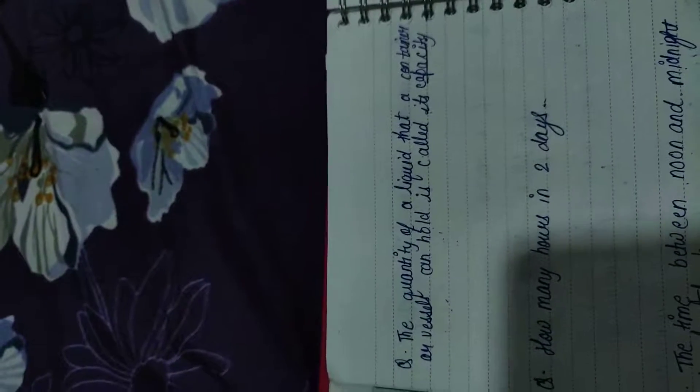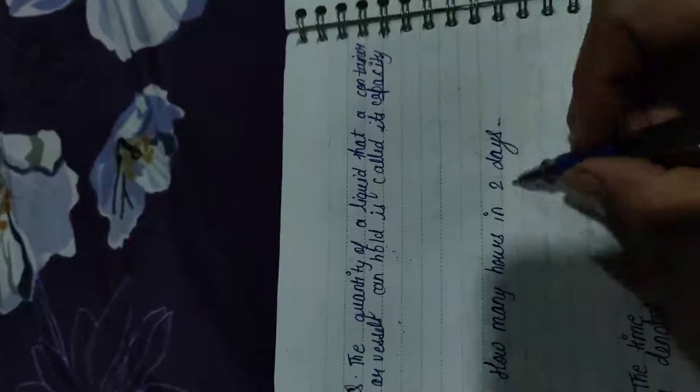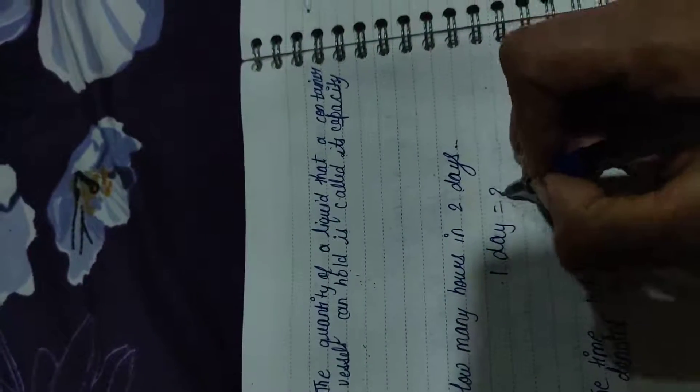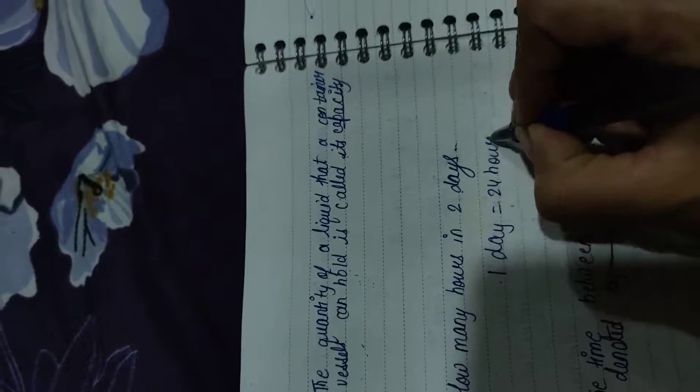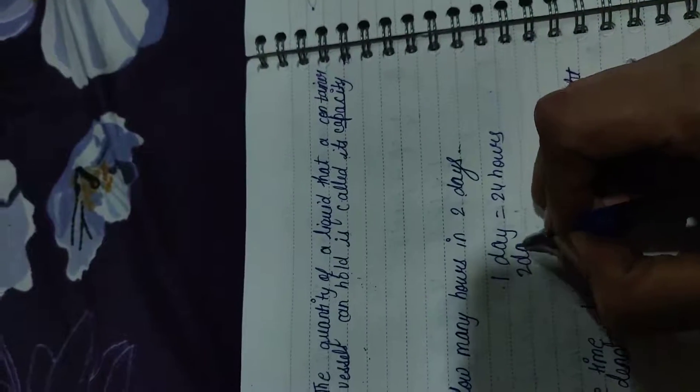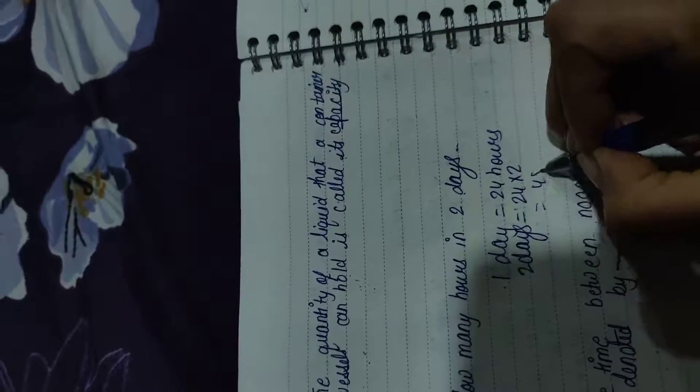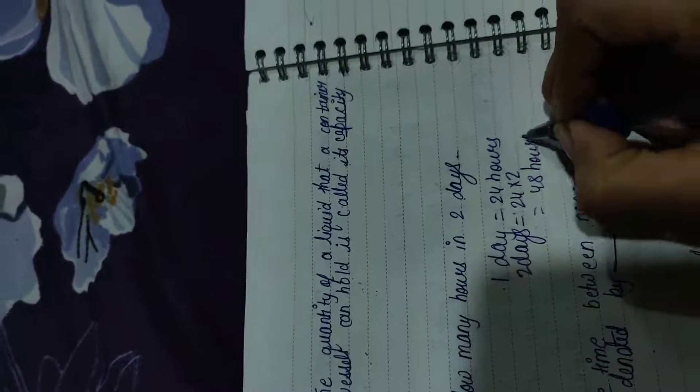Next question is: How many hours in two days? Two days mein kitne hours hote hain? One day mein 24 hours hote hain. To two days mein kitne hote hain? Two days mein 24 into two that is 48 hours.